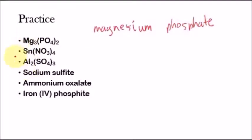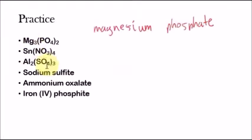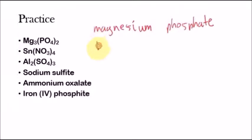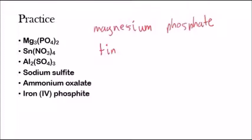Next one: we have another metal, tin. Tin is to the left side of the periodic table, so it's a metal. Now tin is not in these two columns, and it's not silver, cadmium, zinc, or aluminum — so we're going to have to use Roman numerals to assign the oxidation state. We have tin and then NO3 minus, nitrate, which is a polyatomic ion. Metal plus polyatomic ion is a ternary salt.